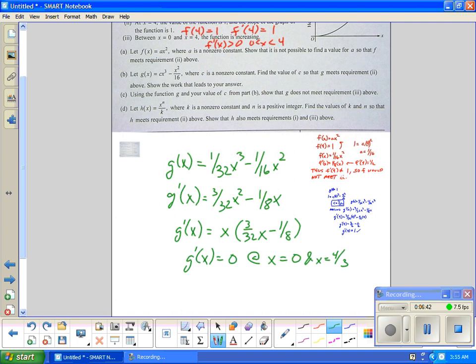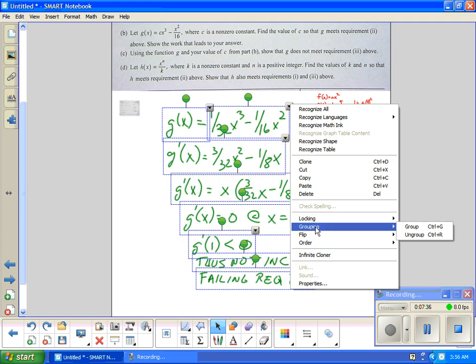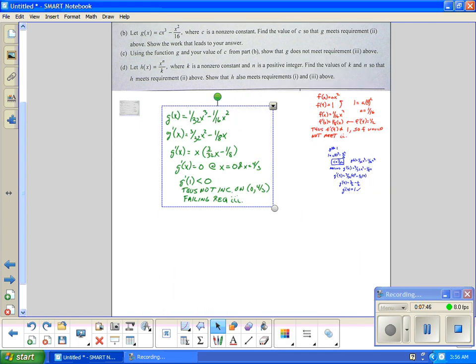So those are my zeros. Well, that's giving me a sign right away that it's probably not always positive. I've just got to show that it's negative. So if I try one, g'(1), it's less than zero. When you plug it in, you get a negative value. So thus not increasing on zero to four-thirds. So it fails requirement three. That's letter C in green.